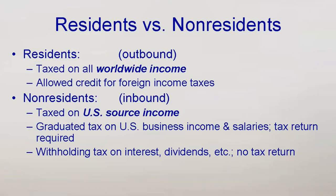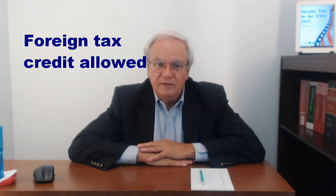U.S. citizens and residents, including U.S. corporations, are taxed on their worldwide income from all sources. This includes income from foreign operations, foreign accounts, foreign investments, foreign wages — everything. This has the potential to cause tax on the same income by a foreign country as well as the U.S. To mitigate this, a credit for foreign income taxes paid or accrued is allowed to citizens and residents. This credit is limited, though, as I'll discuss at length.